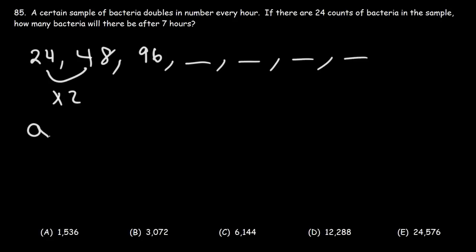Now the general formula for a geometric sequence, if you want to find the nth term, is a_n equals a_1 times r raised to the n. a_1 is the first term, 24. The common ratio, or you can think of it as the growth rate, is 2 because the number of bacteria is doubling every hour.